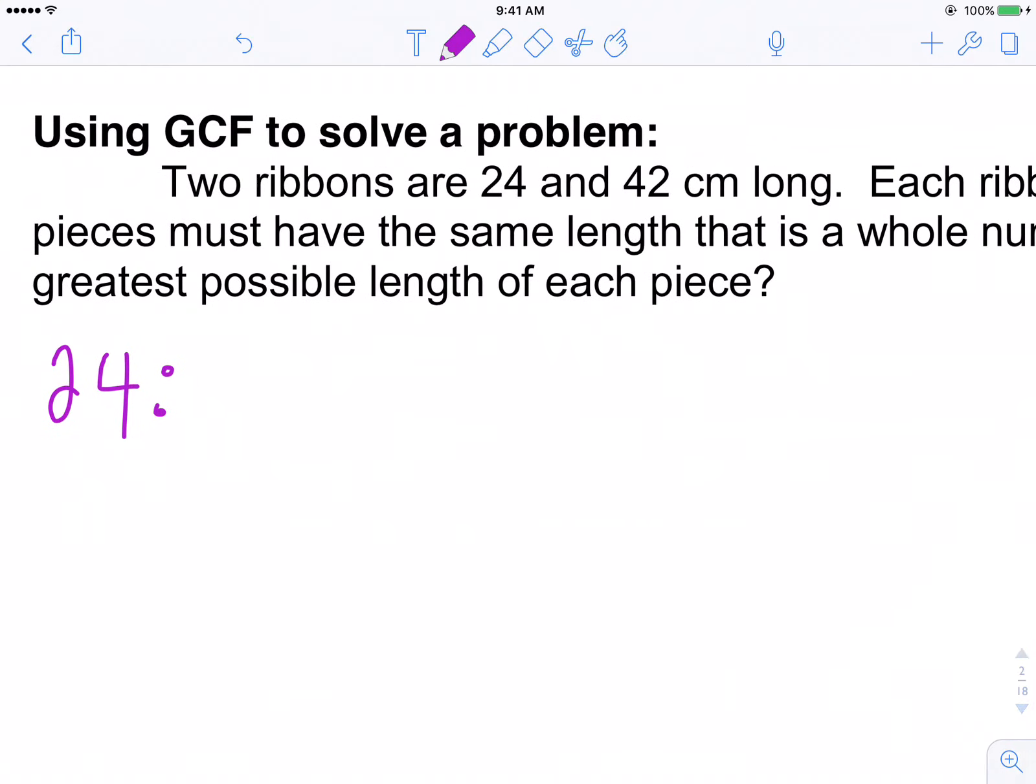You know what? I'll do this one the other way, because I did one one way, one the other way. So the greatest common factor of 24, I know it's 1 times 24. I know it's 2 times 12. I know it's 3 times 8. I know it's 4 times 6. There are my factors of 24.